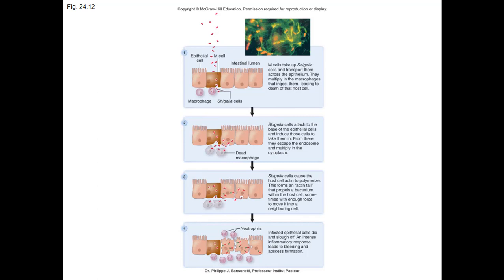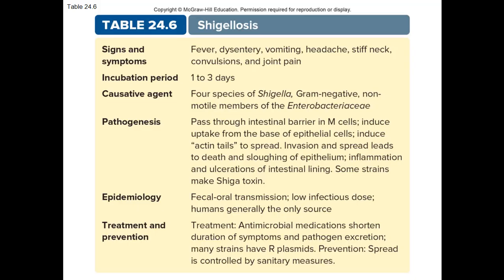Prevention and treatment: sanitation is absolutely critical, and food and water handlers must be monitored. Treatment is ampicillin and co-trimoxazole (trimethoprim and sulfamethoxazole), which shortens symptoms and Shigella excretion time. This is tricky because multiple R factors in the bacteria can lead to resistance. At present, there is no vaccine available. Review pages 644 figure 24-2 and page 423 figure 16-7 for the actin propulsion system.